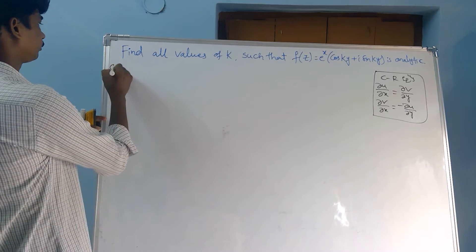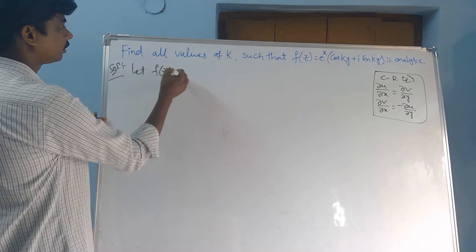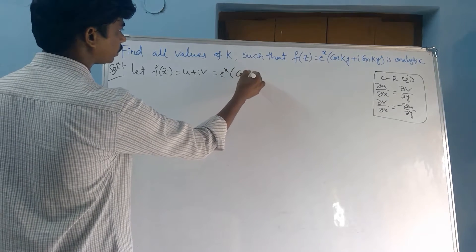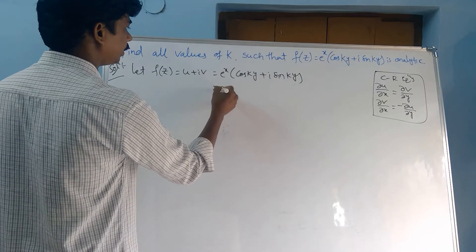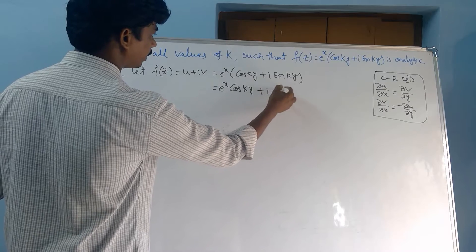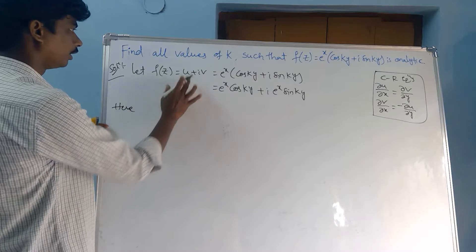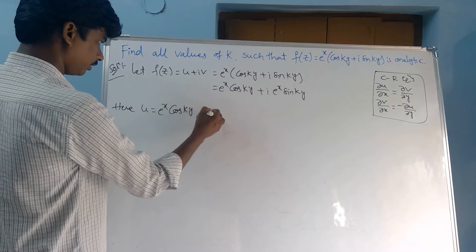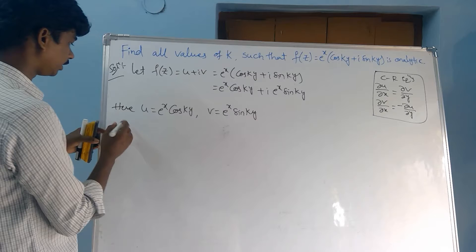Solution: Let f(z) = u + iv = e^x · (cos(ky) + i · sin(ky)), which gives us e^x · cos(ky) + i · e^x · sin(ky). So here, u = e^x · cos(ky) and v = e^x · sin(ky).